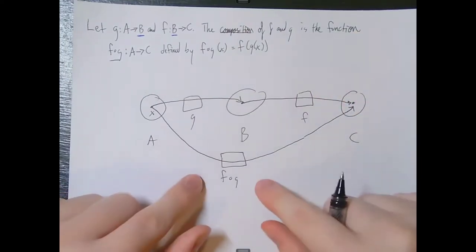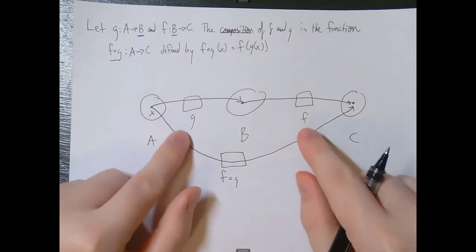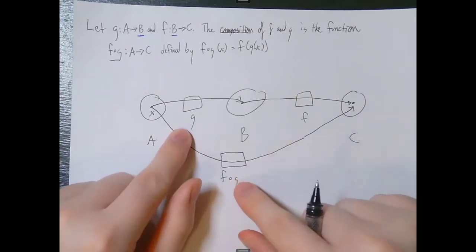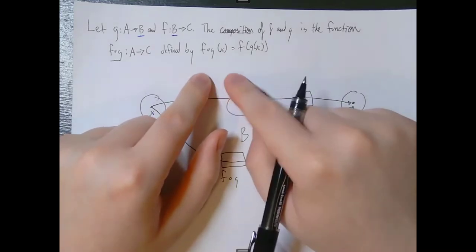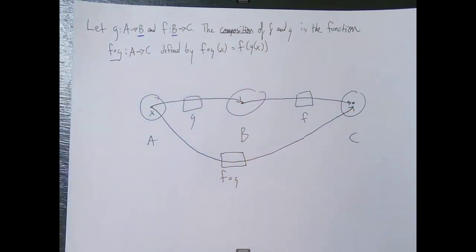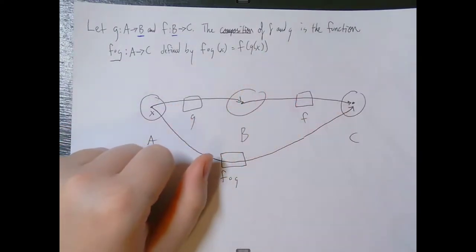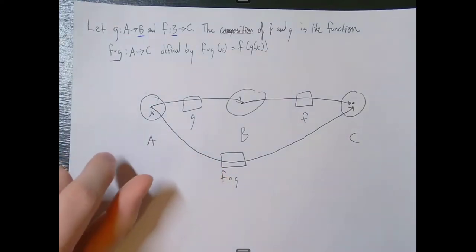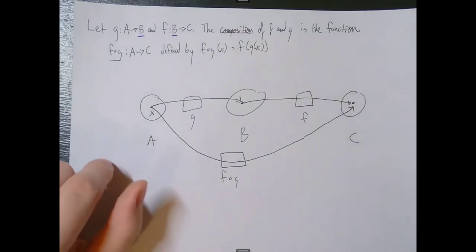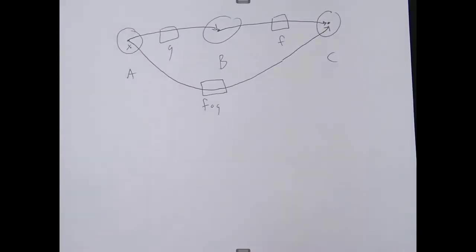I really can't express enough that f composed with g, by itself, isn't connected to g and f. It's a separate function. The only reason why they're similar is because f∘g of x happens to make the same transformation as if we applied g to x and then applied f to g of x.